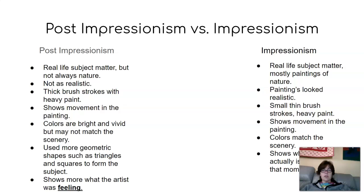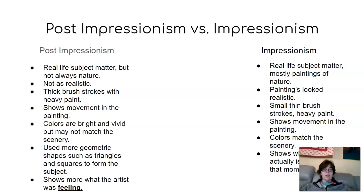They both show movement in their painting — so if the wind is blowing that day, they're going to make it look like the wind is blowing in their painting also. They use bright colors, but in Post-Impressionism the bright colors may not look exactly like what it looks like out that day. So let's say it's a blue sky and you don't see any clouds at all — they may put some clouds in there, and maybe make their clouds look dark or blue, and maybe a black sky if they're feeling sad. Whereas an Impressionist painter would paint exactly what they're seeing. Their colors would match the scenery.